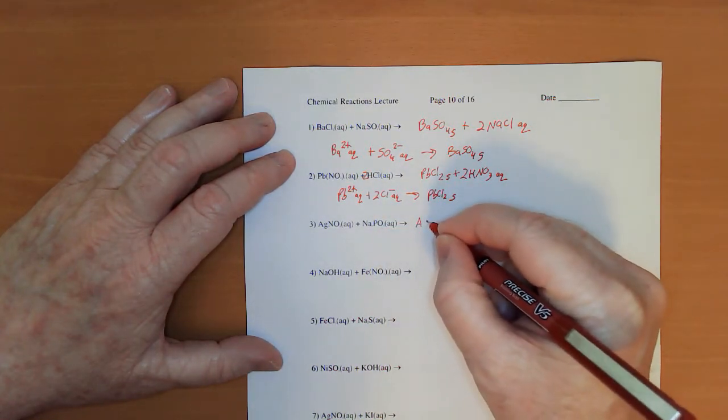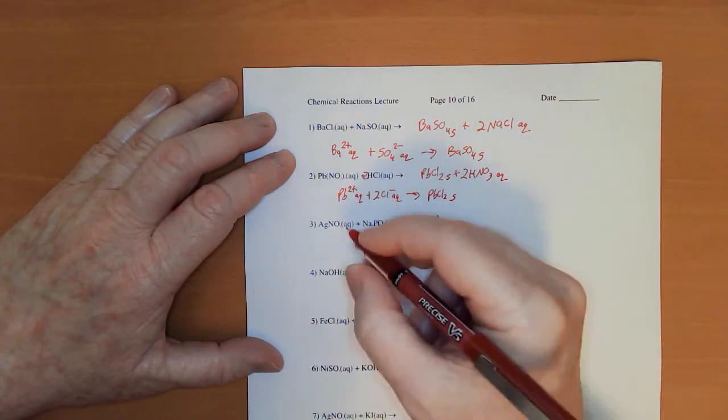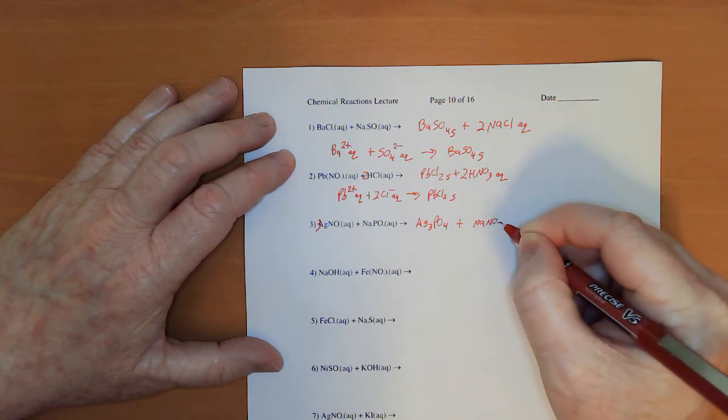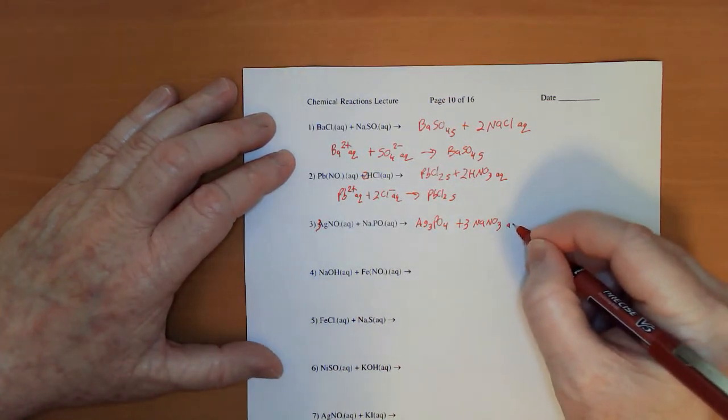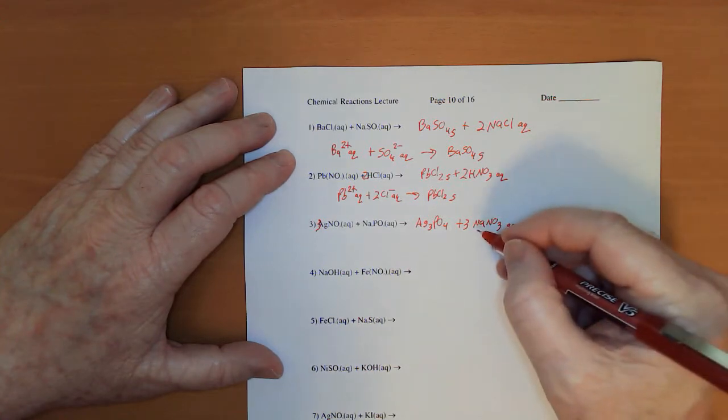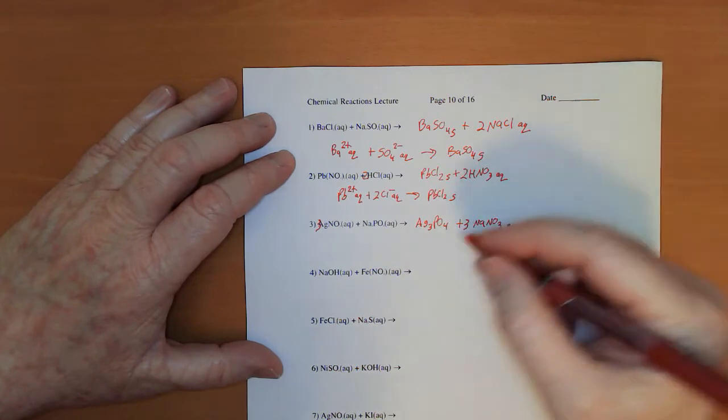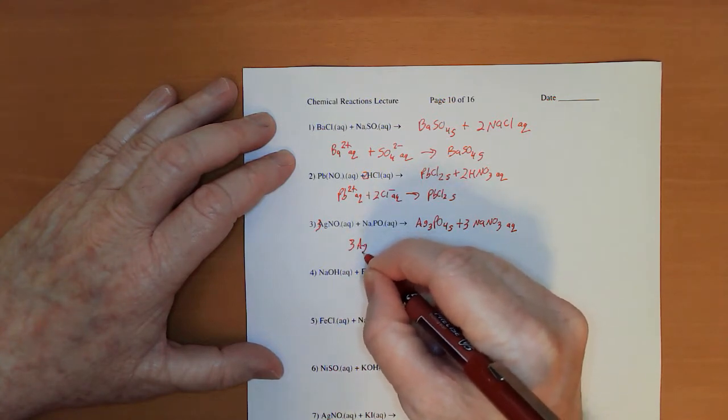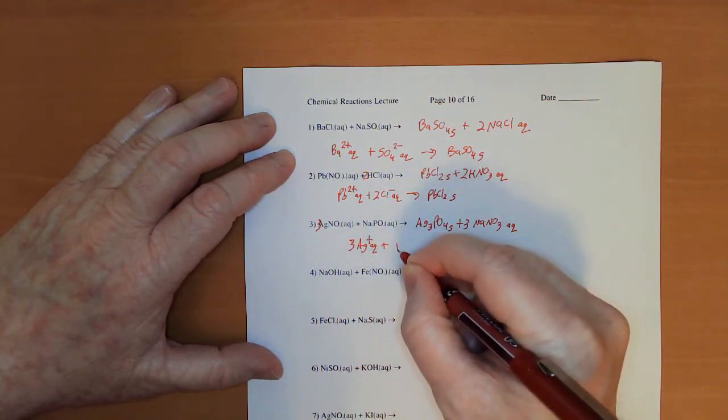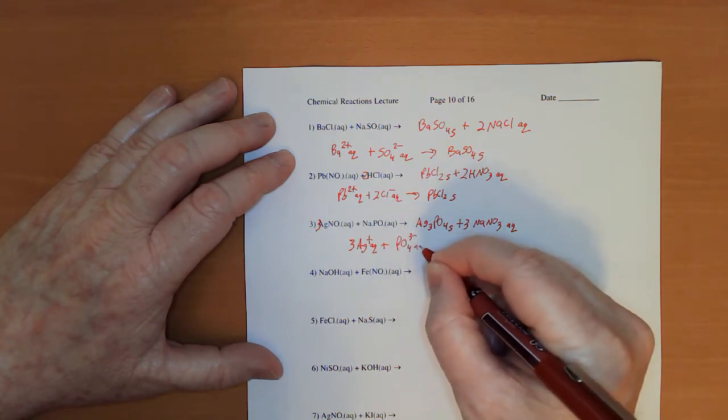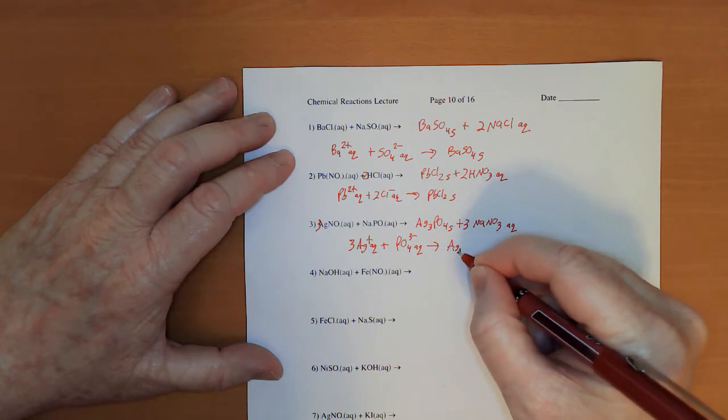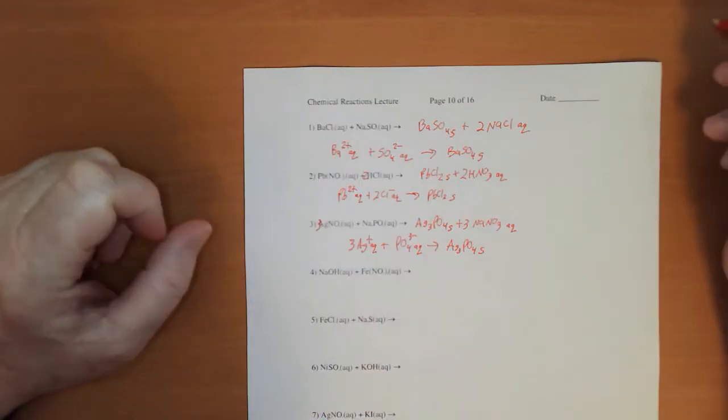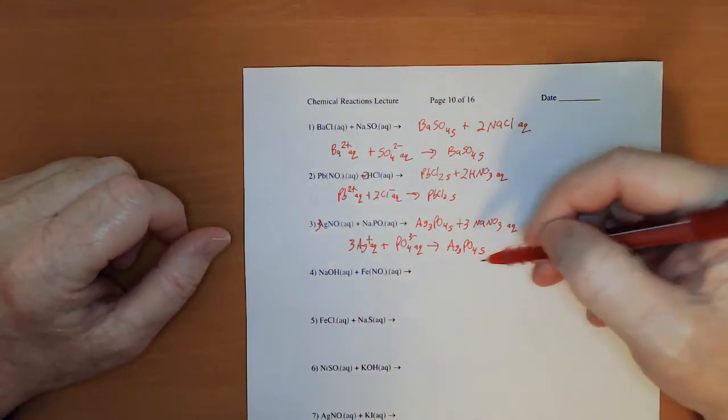Here we're going to have Ag3PO4, so I need a three in front of that, and NaNO3, so I'm going to have to have a three in front of that. This is aqueous, sodium's in group one or nitrate, either way. It's got silver in it, that's going to precipitate. So that means 3Ag+ aqueous plus PO43- aqueous gives me Ag3PO4 solid. Those ratios are really important.